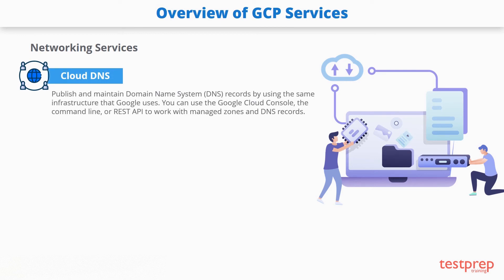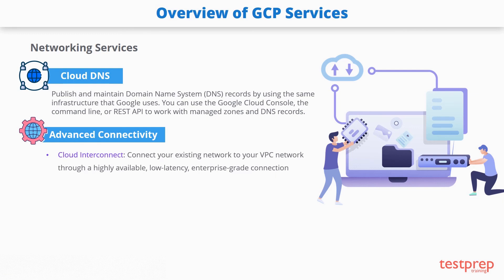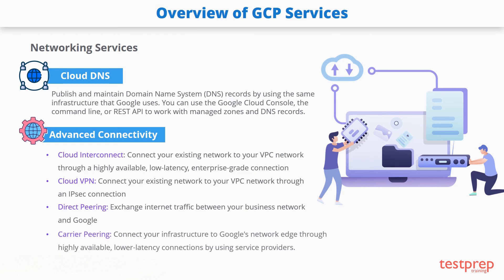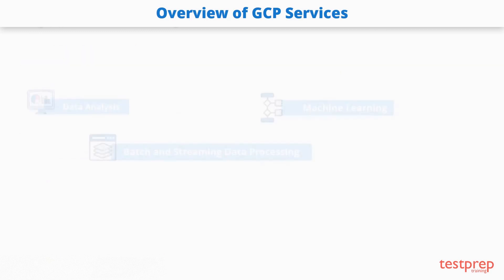Next is DNS service. You can publish and maintain domain name system records using the same infrastructure that Google uses, via the Google Cloud Console, command line, or a REST API to work with managed zones and DNS records. For connecting an existing network to Google Cloud resources, Google offers: Cloud Interconnect, which connects your network to your VPC through a highly available, low-latency enterprise-grade connection; Cloud VPN, which connects through an IP security connection and can also connect two Cloud VPN gateways to each other; direct peering, which enables exchanging internet traffic between your business network and Google at Google's edge network locations; and carrier peering, which connects your infrastructure to Google's network edge through highly available, lower-latency connections using service providers.